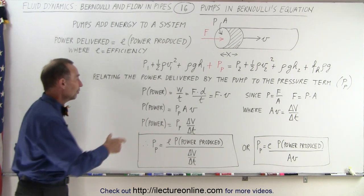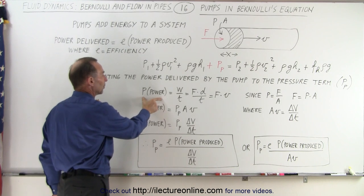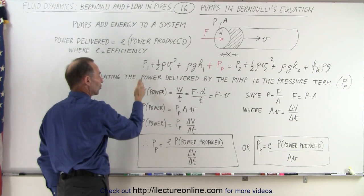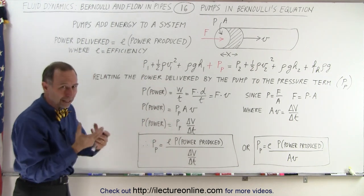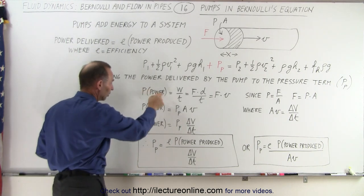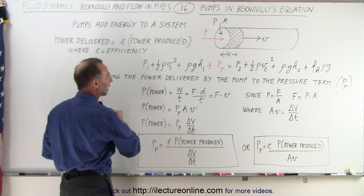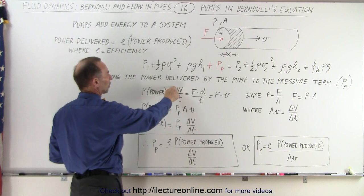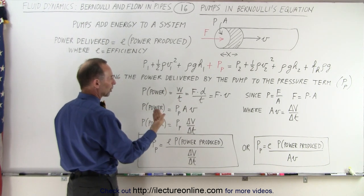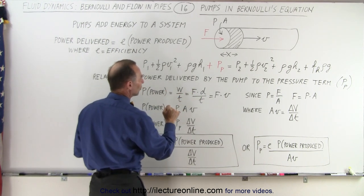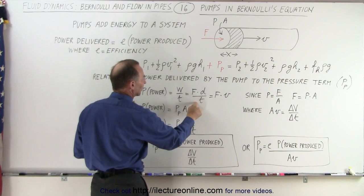So how do we do that? Well, first of all, we start with the definition of power. Now, notice we have P for pressure and P for power. So to give you the difference between the two, I put a little notation here that this is P for power. And by definition, it's work divided by time. And work by definition is force times distance.